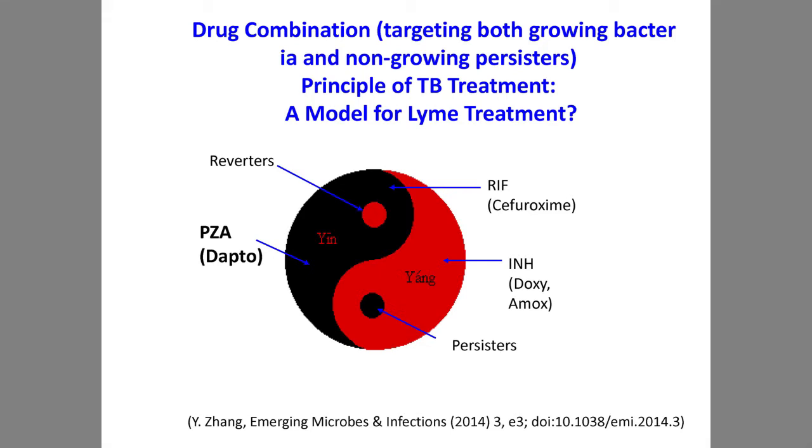This is captured in a yin-yang model. In TB treatment, we use three drugs: isoniazid kills only the growing yang form, rifampin kills both growing and non-growing forms, and pyrazinamide exclusively kills the non-growing persister yin form. You need the three drugs in combination to more effectively cure TB. Single antibiotic monotherapy in the 1950s took 18 months; combination therapy treats TB in six months. This is exactly because of the heterogeneity of the organism in vivo — single antibiotics don't cover all bacterial populations, so drug combination is essential.